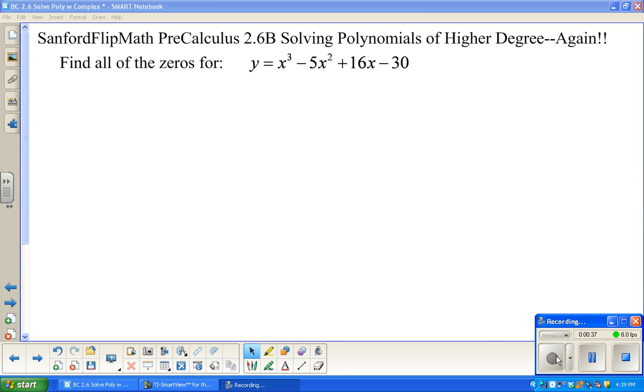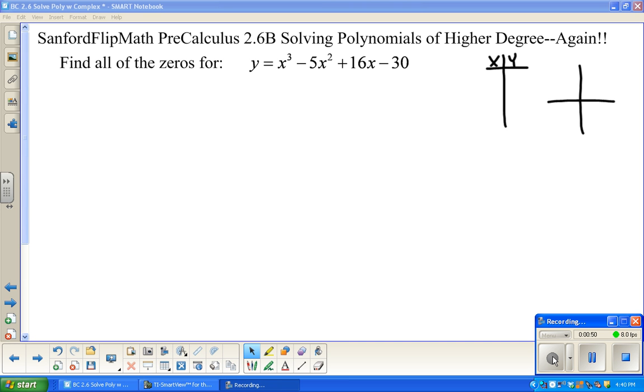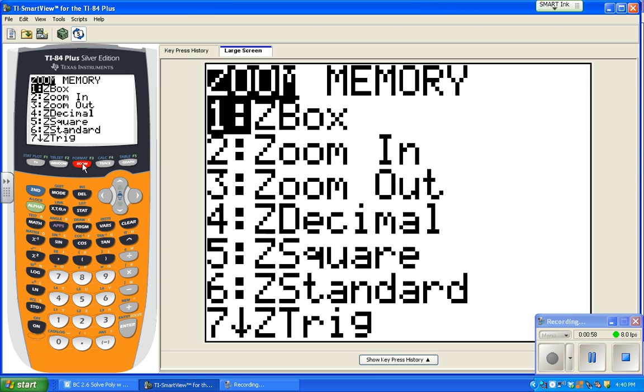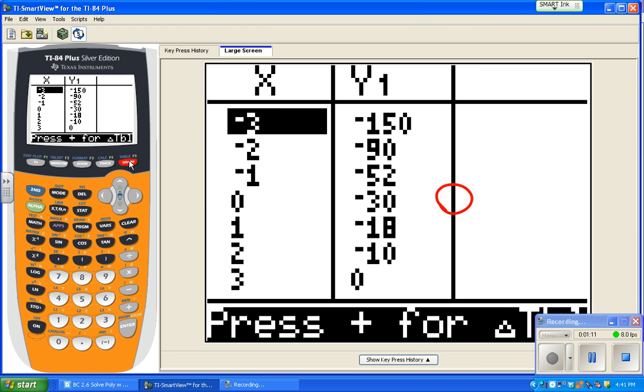The idea here is as we solve these, we need to start out by finding a solution somehow. That solution might be found by looking at a graph. It might be found by looking at a table. So we'll just take a quick peek at the graph. I've typed in the equation on the calculator, did a zoom standard, and there we go. It looks like it's going right through x equals 3. Let's take a quick look at the table just to see if that matches, and it appears to be the same.